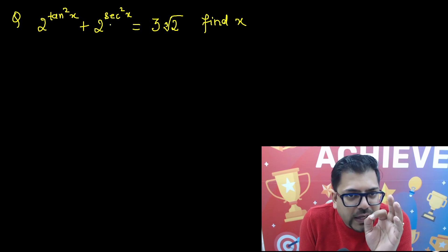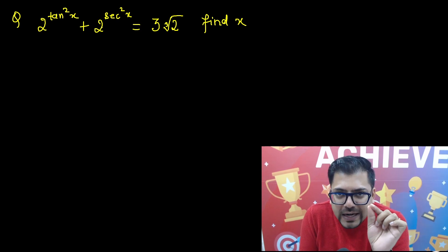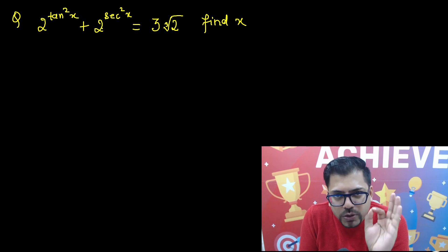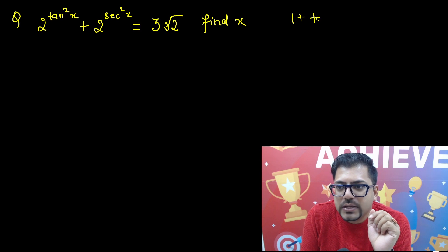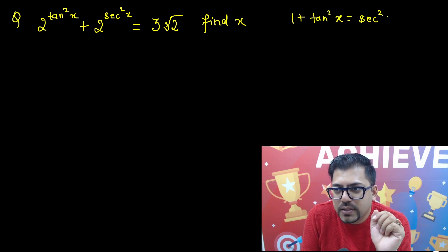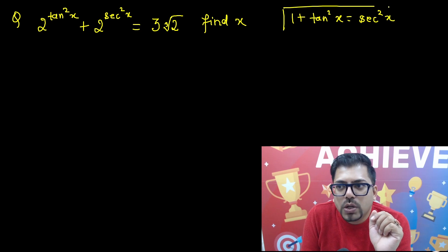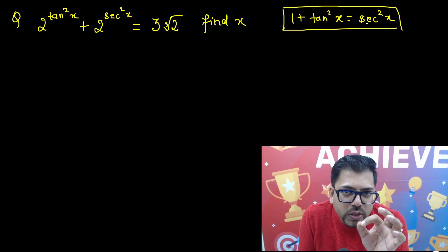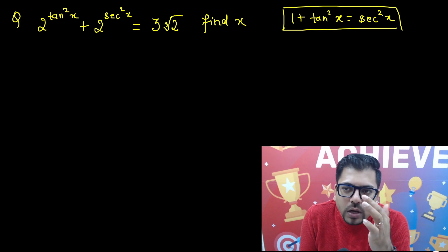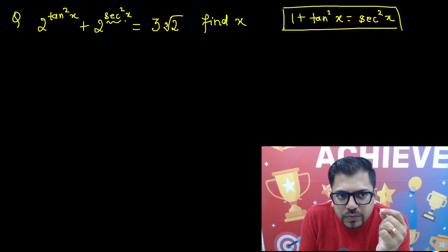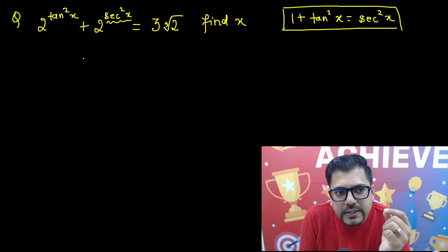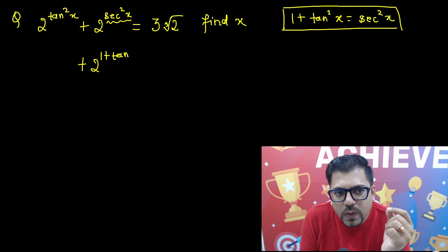So here the first thing that you need to know, and that makes this question a proper class 10th question, is that you need to know that 1 plus tan square x is equals to secant square x. This formula you need to know. So if you don't know this formula, then probably it will be tough. So you have to substitute the value of secant square x, and you have to write 2 raised to power 1 plus tan square x.